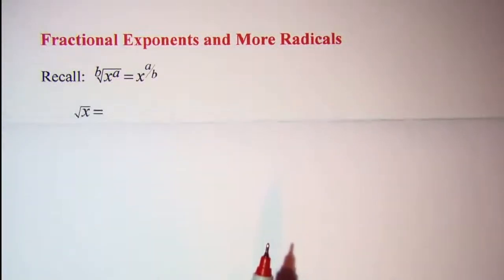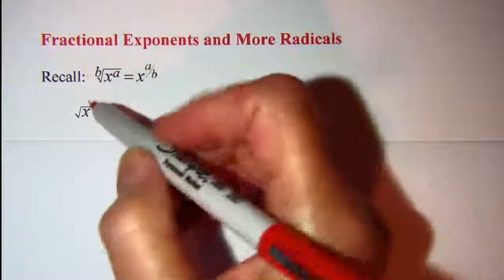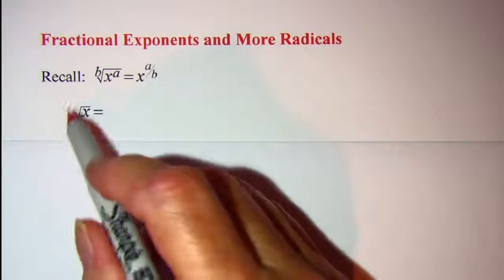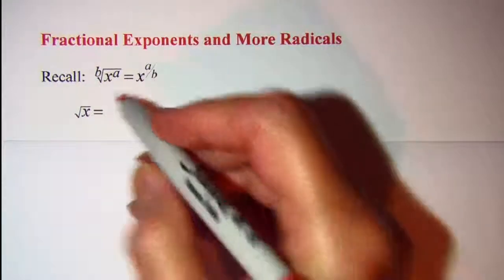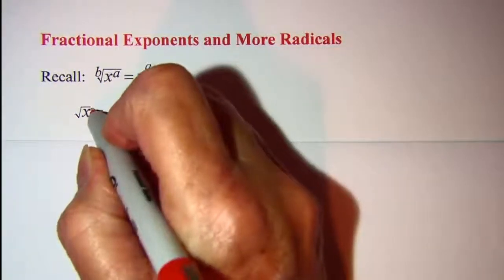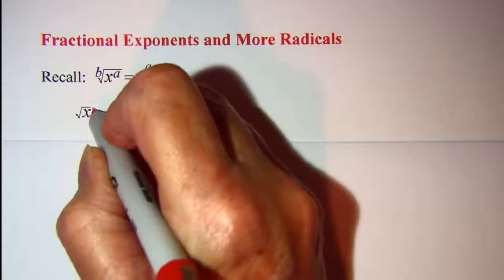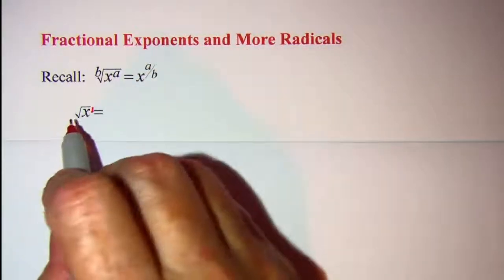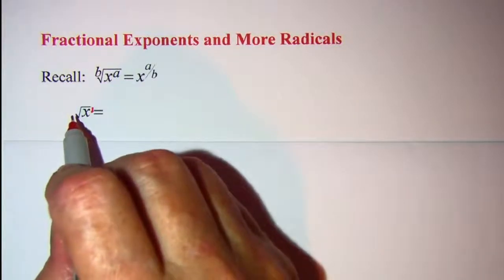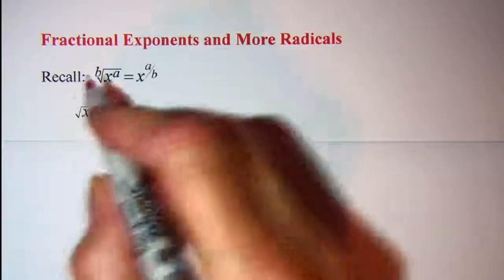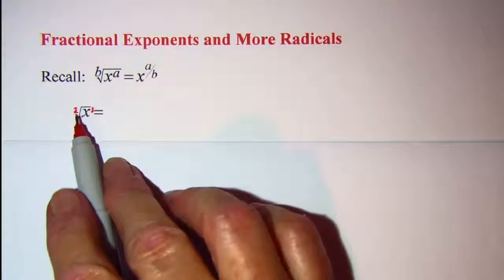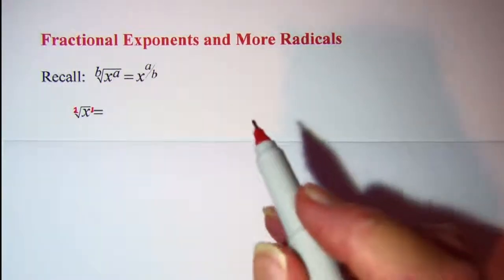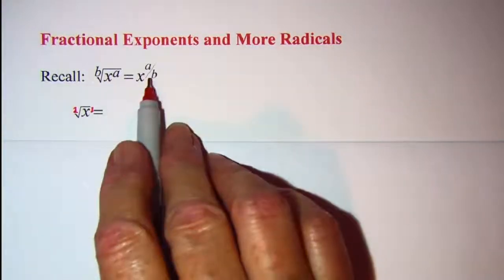So let's practice this rule with the square root of x. We don't have any numbers visible, but we know that our exponent on the radicand is 1 and we know that the index on the square root is 2. You don't show the 2 on the square root because square root is used so often, but now we can apply this rule.